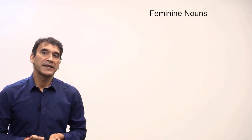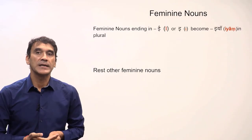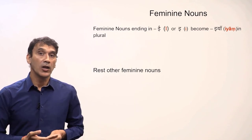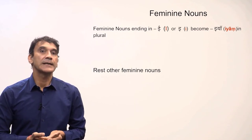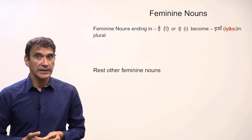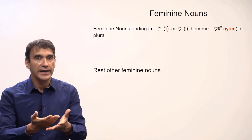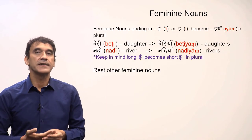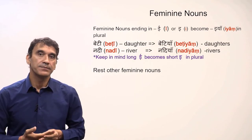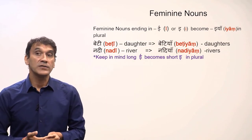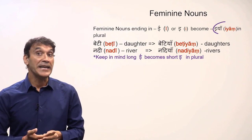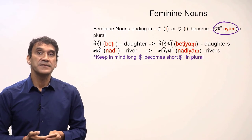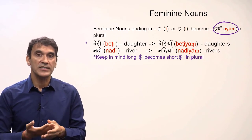Let's now look at feminine nouns. There are mainly two types of feminine nouns. Type one are feminine nouns that end in 'ee' — both long and short. Type two is the rest of the feminine nouns, meaning those that do not end in 'ee'. With feminine nouns that end in 'ee', the ending 'ee' changes to 'iyaan' in plural.